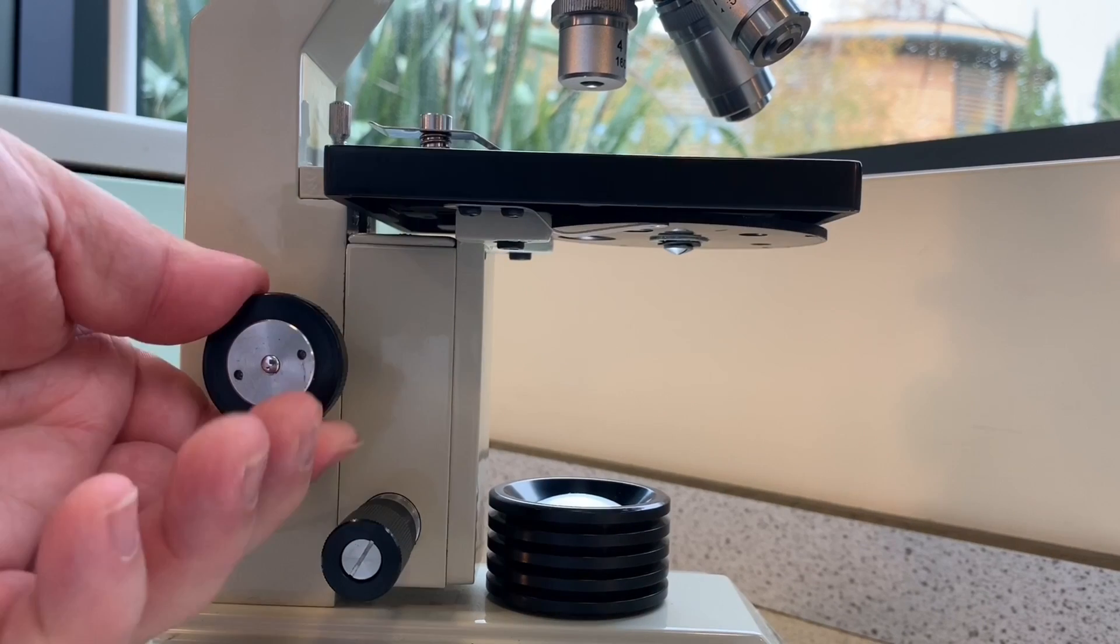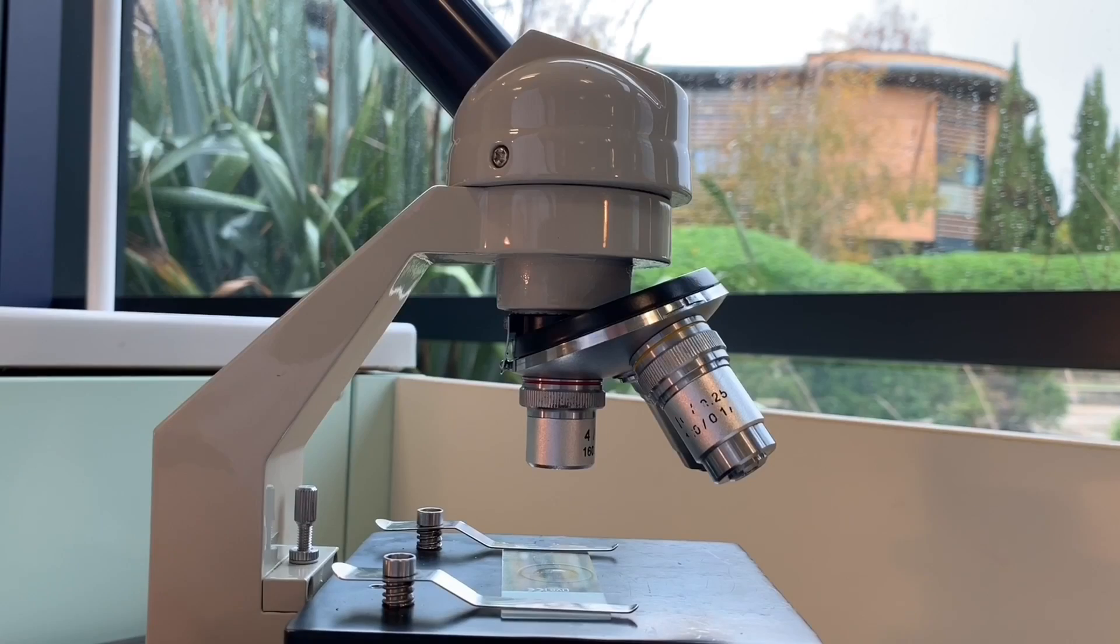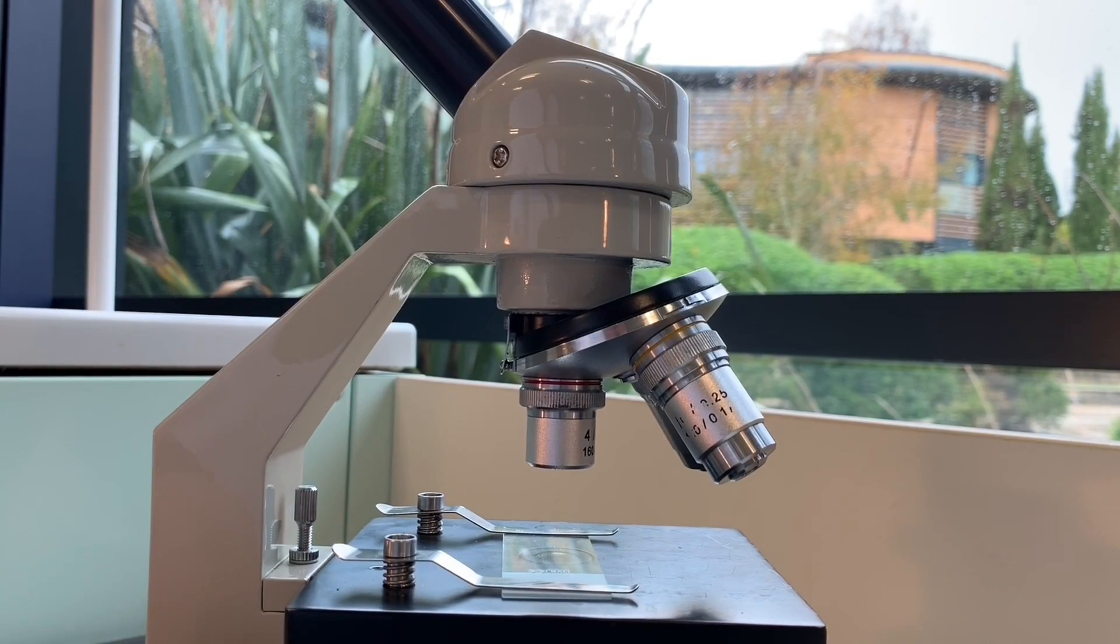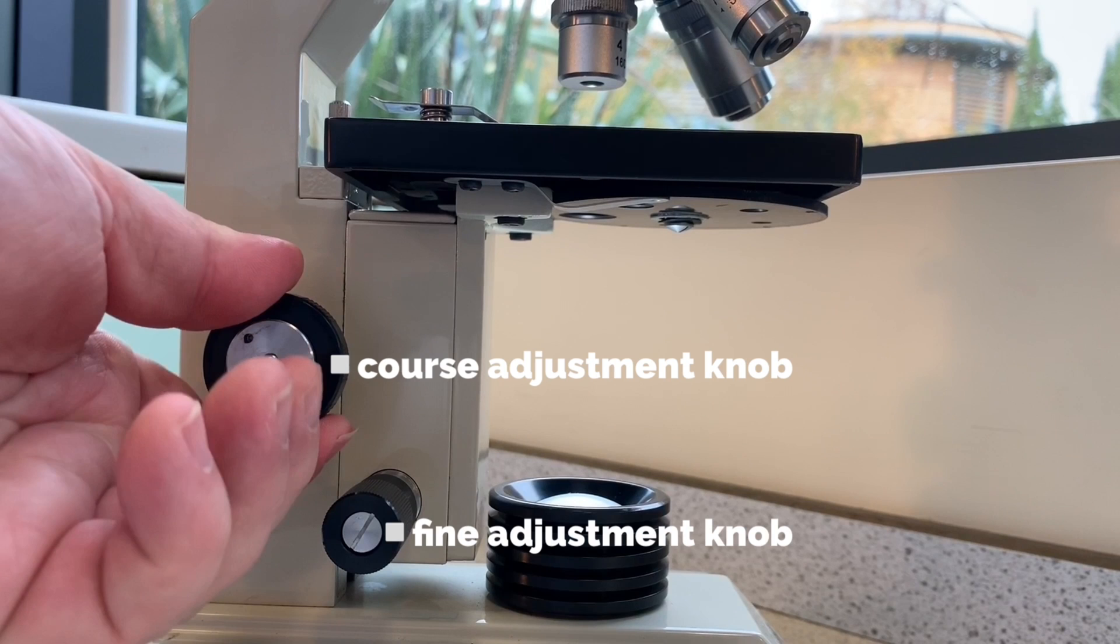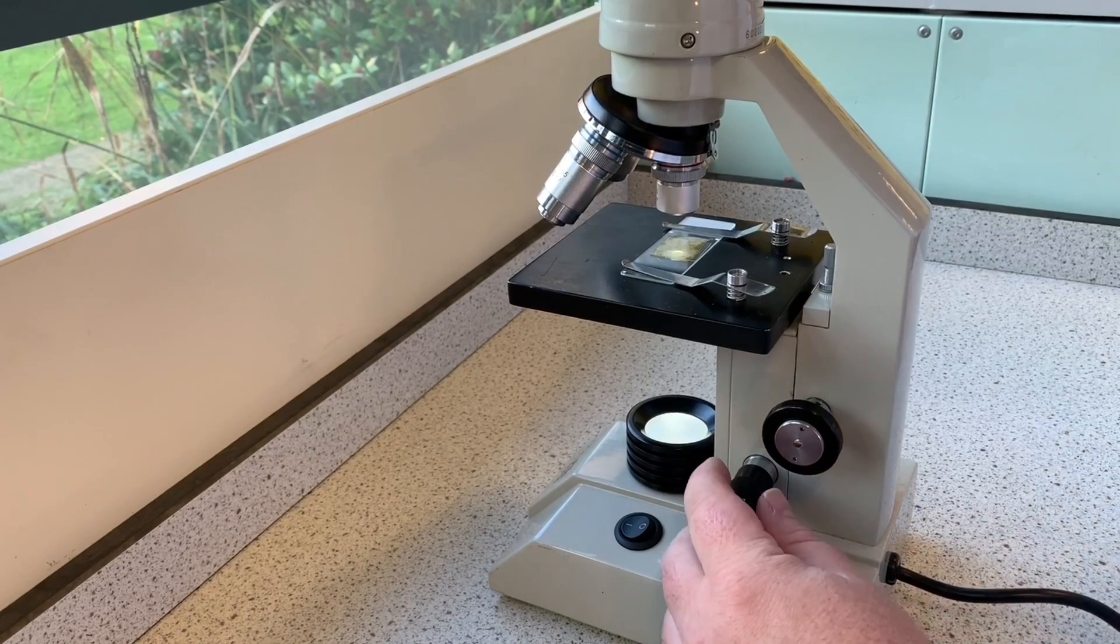The next part is the coarse adjustment knob. As you rotate this, it moves the stage and the specimen closer to the objective lens to bring it into focus. You also have a finer adjustment knob which makes smaller changes to the stage and helps to really get that fine detail from your specimen.